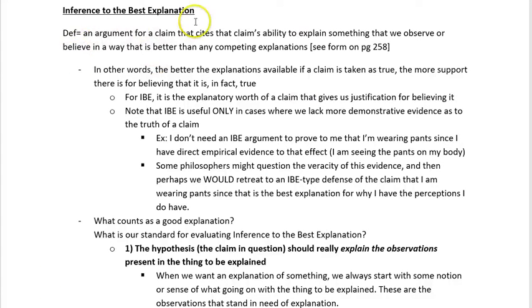Our definition here for Inference to the Best Explanation is: an argument for a claim that cites that claim's ability to explain something that we observe or believe, in a way that is better than any competing explanations. The key idea is that in Inference to the Best Explanation, I'm citing a hypothesis's ability to explain something as my reason for believing it. Its explanatory usefulness is my reason for believing that it's true.